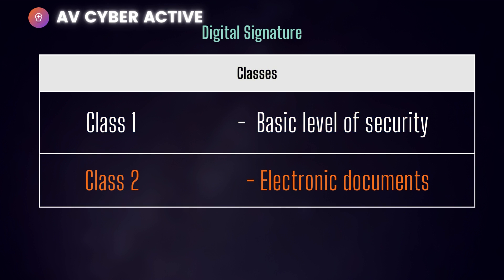Class Two — this is where it starts getting a bit more serious. This is where most of the digital signatures you'd come across are used, such as when you file tax documents or your Form 16. Class Two digital signatures are used in environments where the risk or consequences of data compromise is moderate, and the signatures in those documents are most of the time pre-verified against a database to authenticate the signer's identity.